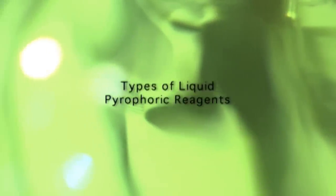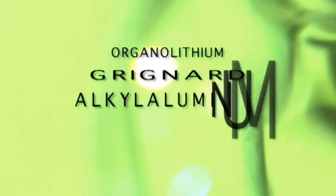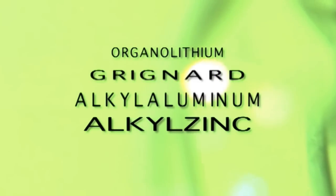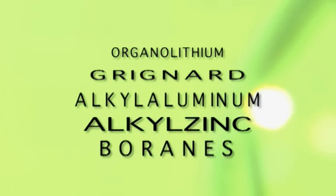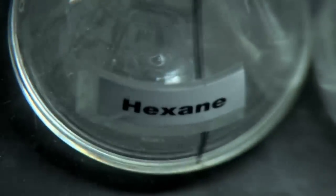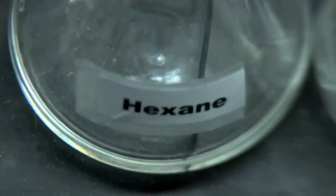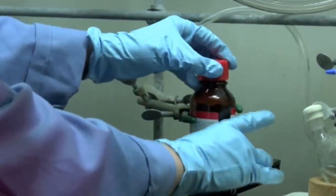Some of the most common types of liquid pyrophoric reagents include organolithium reagents, Grignard reagents, alkyl aluminum reagents, alkyl zinc reagents, and boranes. Pyrophoric liquids usually come in a solution within a flammable organic solvent such as hexane or pentane and in a glass bottle or steel cylinder.